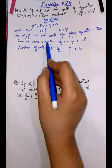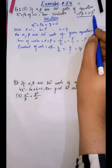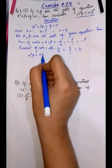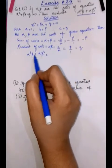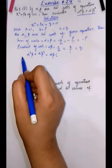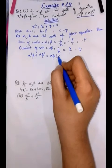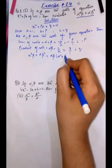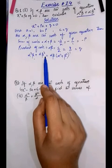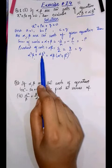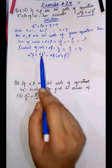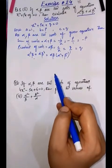We have found alpha plus beta and alpha beta, and now we have to evaluate the expression: α³β + αβ³. We will take common alpha beta from both terms. After taking alpha beta common, we get alpha beta times (alpha² + beta²). You have to always break the expression into alpha beta and alpha plus beta form to evaluate the values.